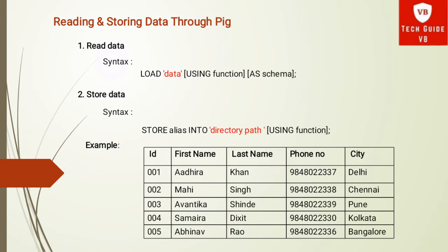The second point is how to store data in Pig. See the syntax: STORE alias — where alias is the name of the relation — INTO, which is a keyword, then in single quotes the directory path. Write the name of the storage directory; if this directory already exists, the store operation will fail. Then in square brackets there is 'USING function' — USING is a keyword, function is a store function, and PigStorage is the default store function.